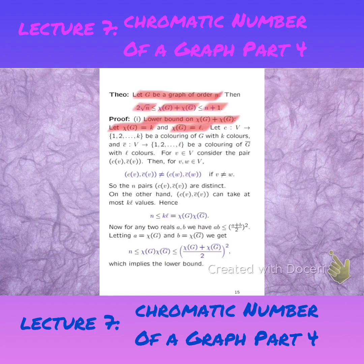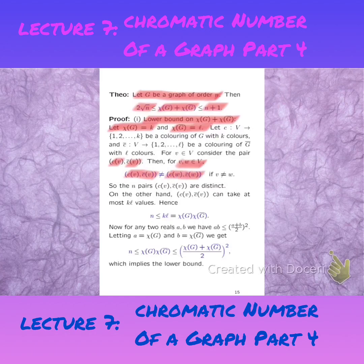To prove the lower bound is relatively straightforward. We look at the chromatic number of G and the chromatic number of G-bar, and we let them be K and L respectively. Then we look at all the ordered pairs of colors — the color assigned to V in G and the color assigned to V in G-bar.